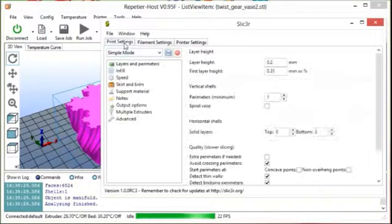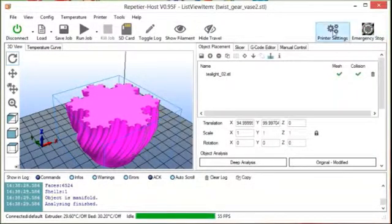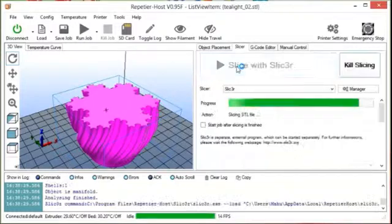Now in print settings, give appropriate settings for the test object you are printing. Save and close the slicer settings. Then slice and print your first object.